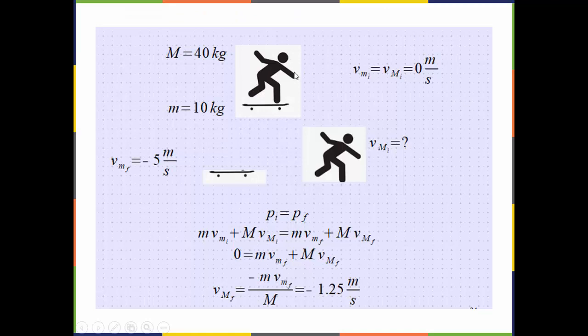Here's an example with a skater on a skateboard. The person has a mass of 40 kilograms and the skateboard has a mass of 10 kilograms. The skater jumps off the skateboard. The skater applies a force to the skateboard, and the skateboard applies an equal and opposite force to the skater — Newton's third law. The skateboard flies back in the opposite direction. Next time you're near a skateboard, stand on it and jump off, and the skateboard will go off in the other direction.